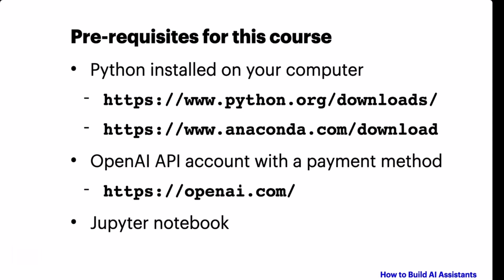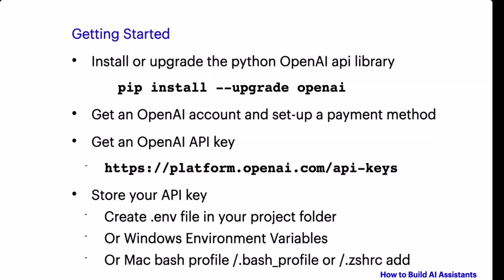Of course you will need to have an OpenAI account with a payment method. For our lessons we are going to use Jupyter Notebook. Jupyter Notebook is included in the Anaconda download. If you decide to use VS Code you can install a Jupyter Notebook plugin which is available on the VS Code marketplace. You will also need to install or upgrade the Python OpenAI API library using the pip command.